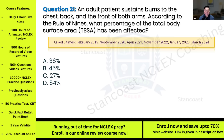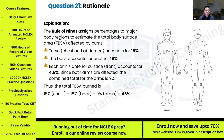The correct answer is letter B — 45%. Using the rule of nines for adults: the chest and abdomen account for 18% on the front side; the back accounts for 18%; and each arm's anterior surface accounts for 4.5%, so the combined total for both arms is 9%. Adding these: 18% (chest) + 18% (back) + 9% (both arms) = 45%.